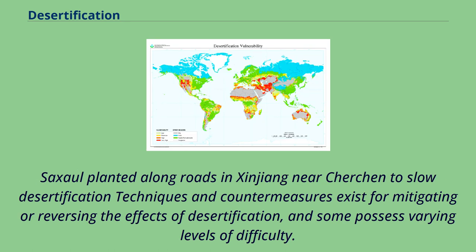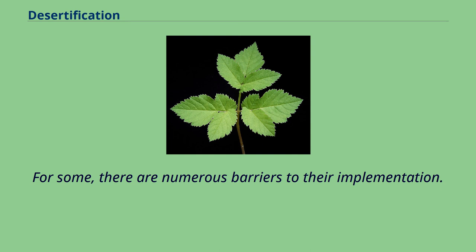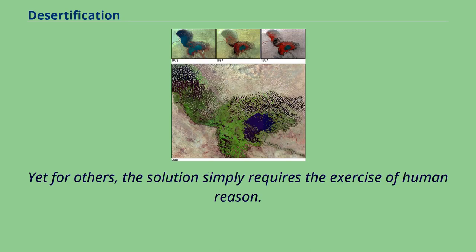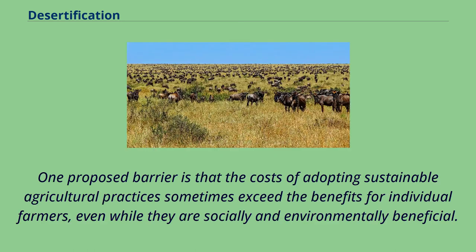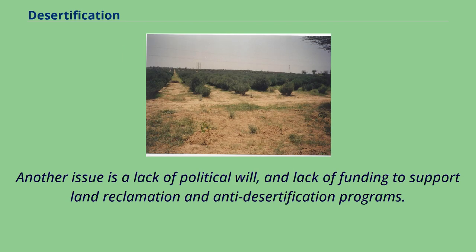Techniques and countermeasures exist for mitigating or reversing the effects of desertification, and some possess varying levels of difficulty. For some, there are numerous barriers to their implementation, yet for others the solution simply requires the exercise of human reason. One proposed barrier is that the costs of adopting sustainable agricultural practices sometimes exceed the benefits for individual farmers, even while they are socially and environmentally beneficial. Another issue is a lack of political will and funding to support land reclamation and anti-desertification programs.